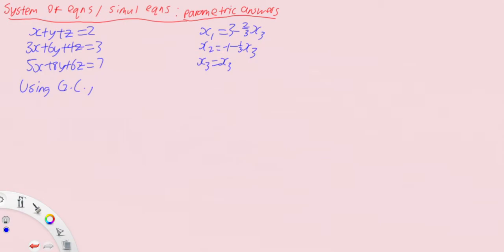So we can then change this to x3 equals t. Obviously, x3 will be z, so what we can do is using the GC, we write z equals t.